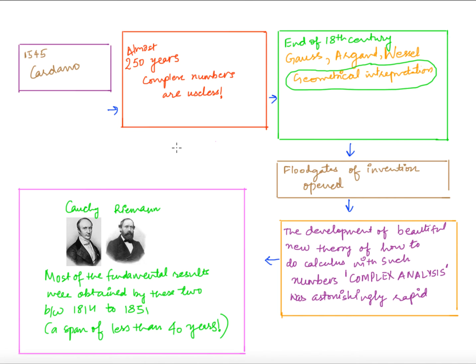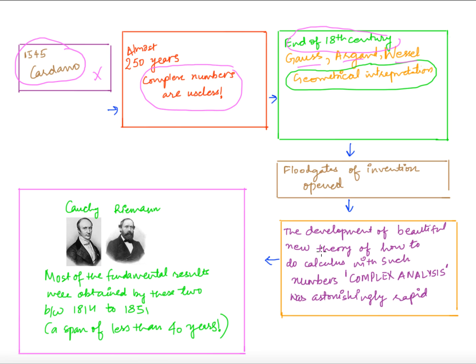To summarize: in 1545, Cardano introduced complex numbers but rejected them. For almost 250 years they were thought useless. At the end of the 18th century, Gauss, Argand, and Wessel gave the geometric interpretation of treating complex numbers as points in the plane. After that, the floodgates of invention opened. People started developing the beautiful theory of doing calculus with complex numbers — differentiating, integrating — and this subject of complex analysis originated.